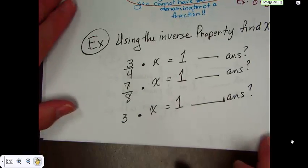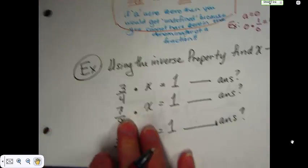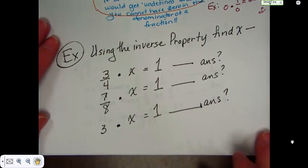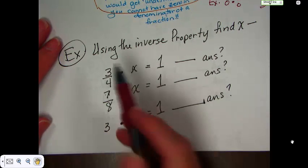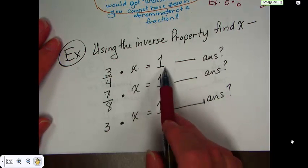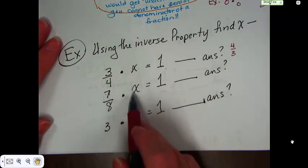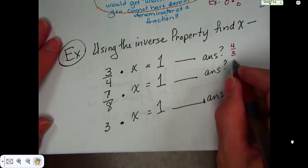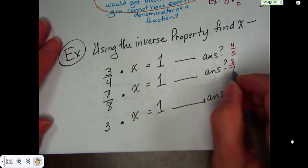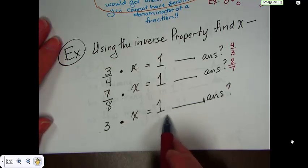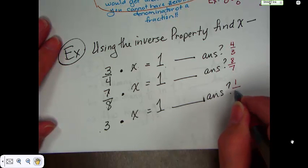Okay. And then we use the inverse property to find numbers. As I said earlier, we use it for equations. 3 fourths times what number is going to give us 1? Oh, yeah. Okay. 4 over 3. 7 eighths times what number gives us 1? Oh, yeah. That's right. 8 over 7. 3 times what gives us 1? Oh, 1 over 3.